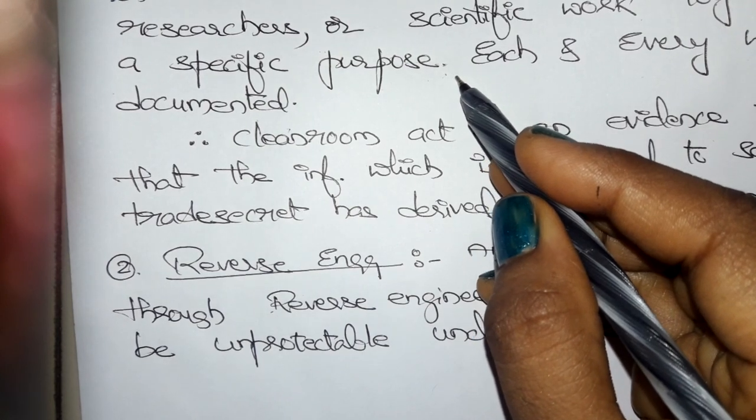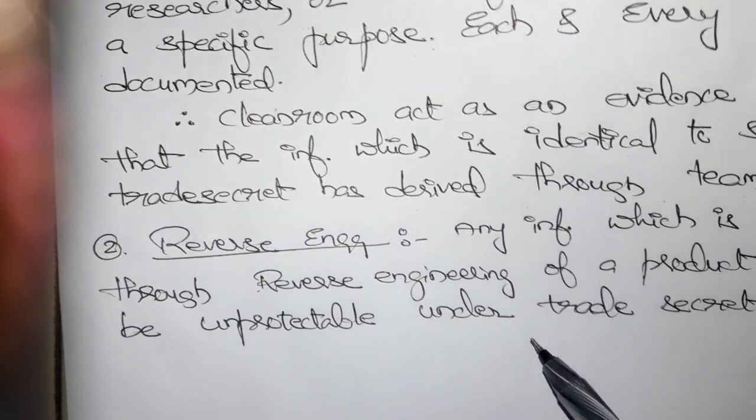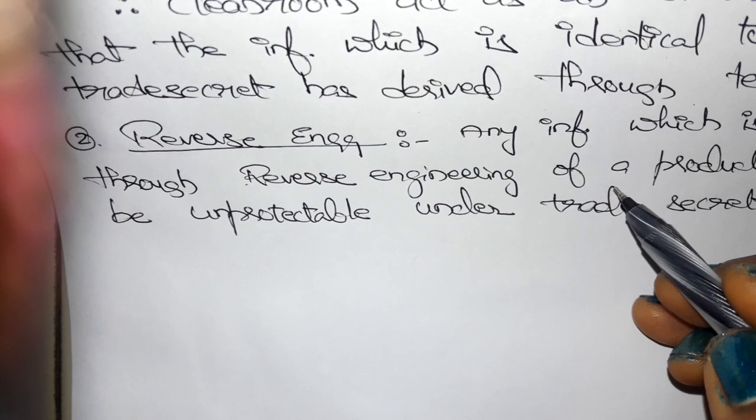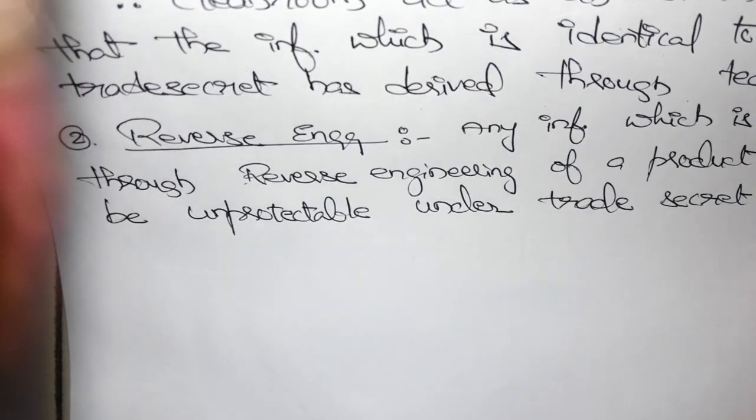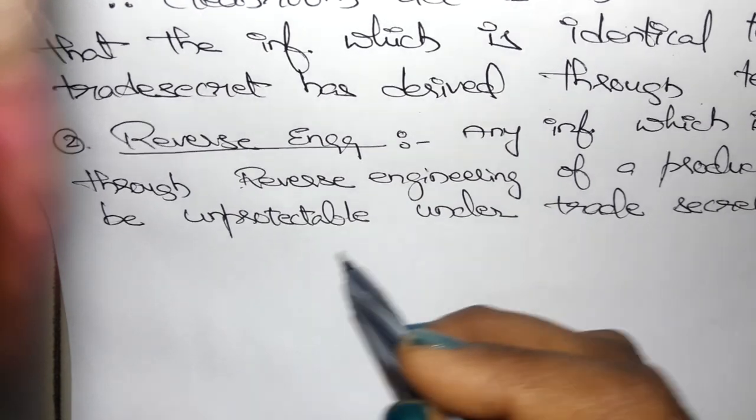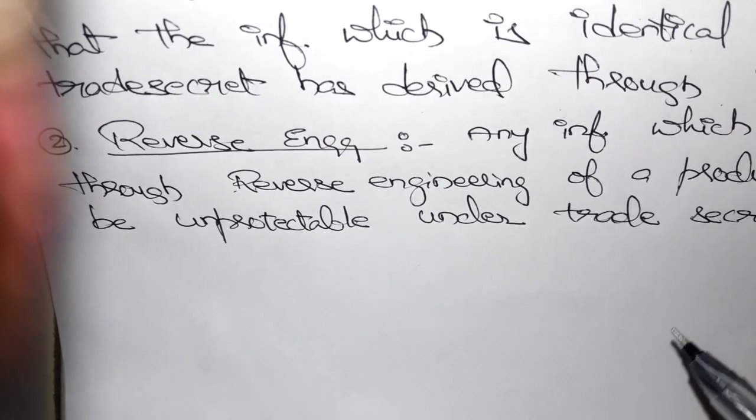They can have proof that this trade secret was prepared by them only. Reverse engineering: any information obtained through reverse engineering of a product will also be unprotectable under trade secret.